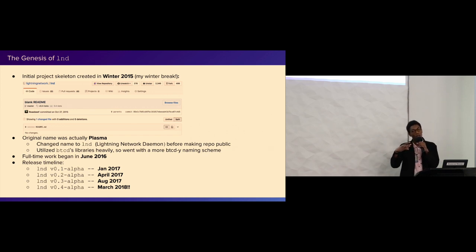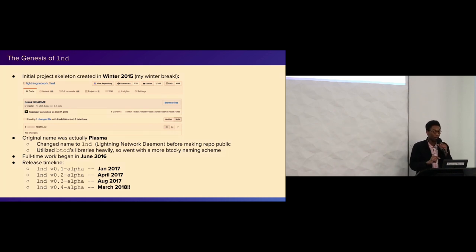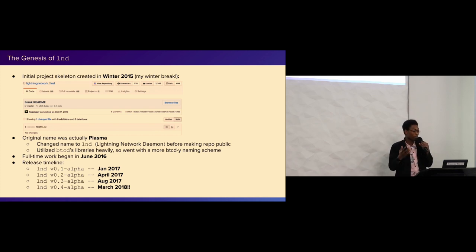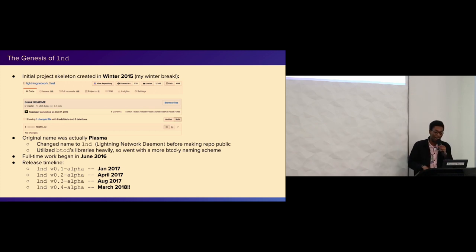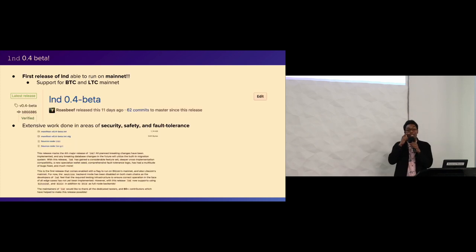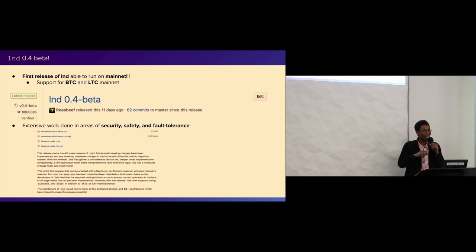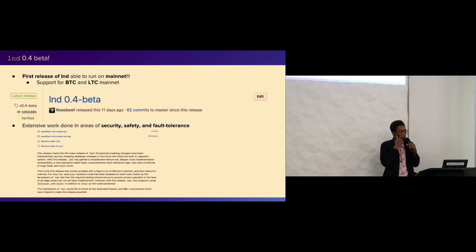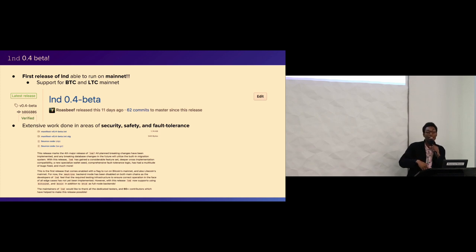With 0.3 we could do multi-hop payments and had some but not all of the on-chain contract handling. We had autopilot for the first time - an automation system within LND that could manage channels. Now we're here with LND 0.4 beta, which is the first beta release. This is the first release that supports mainnet. Before we only had testnet support, and people got really excited and did mainnet anyway, but we were making breaking changes and discouraged people from updating.